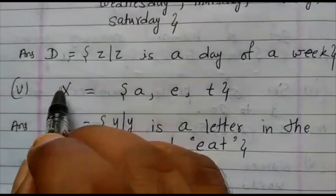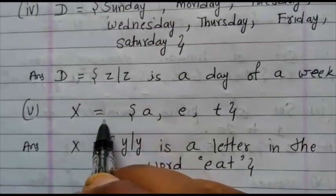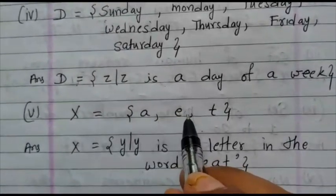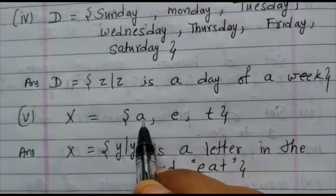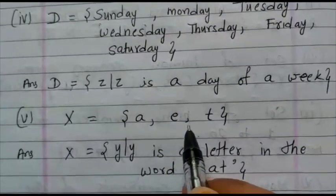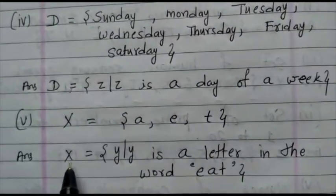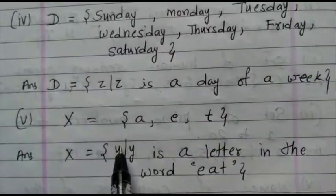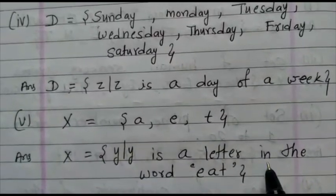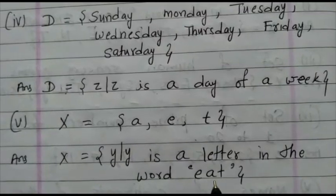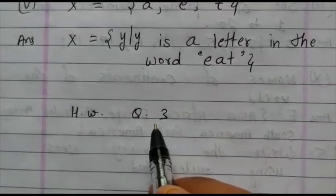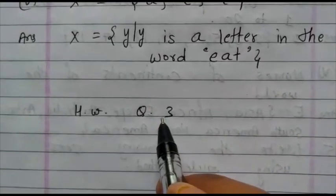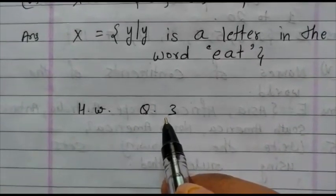Next one. Set X equals a, comma, e, comma, t, close the bracket. What you are looking, that is the word eat. How to write? X equals y of y is a letter in the word eat. Now your homework is question number 3. Try to complete your homework, students. Thank you very much.